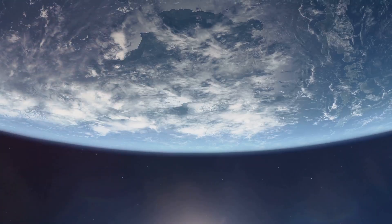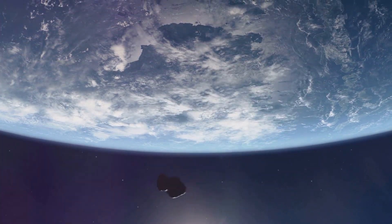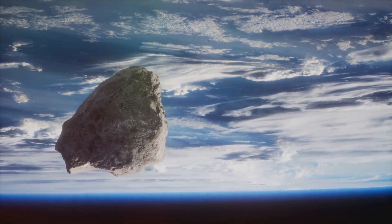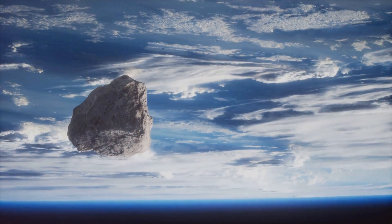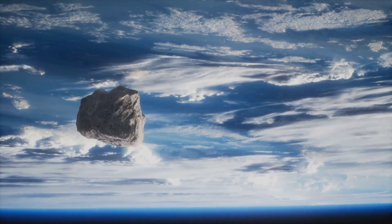Alright, let's get into it. So, what is 2024 PT5? This asteroid is a tiny rock, no bigger than a bus, that normally orbits the sun as part of a small asteroid belt near Earth.